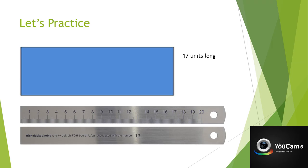For a little bit of practice, I've included a slide with a ruler and a rectangle above it. This is a standard ruler that measures in inches. We want to show the children that when you place the beginning of the rectangle at the zero notch of the ruler, you count out to where it stops. In this instance, the rectangle stops at the number 17, meaning this rectangle is 17 inches long.